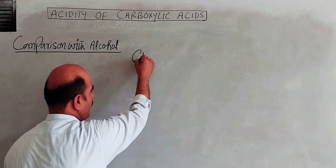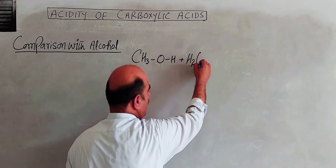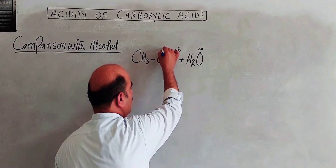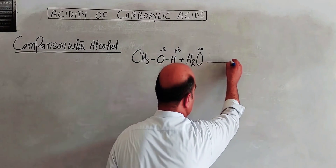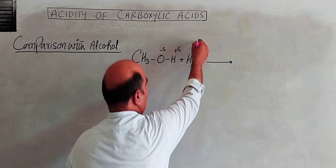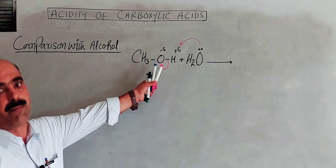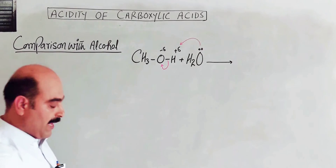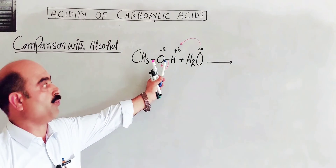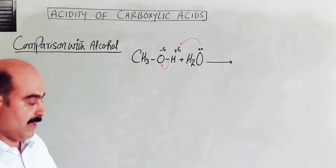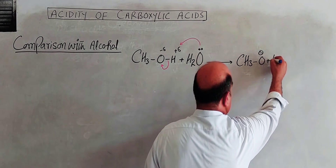For comparison with alcohol, consider the ionization of methyl alcohol: CH3OH plus water. The lone pair of electrons on oxygen of water attacks the partial positive hydrogen of the alcohol due to the electronegativity difference between oxygen and hydrogen. This causes heterolysis — the bond breaks such that both bonded electrons shift towards the more electronegative oxygen atom.